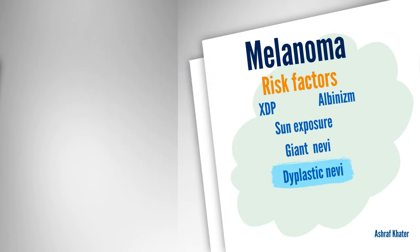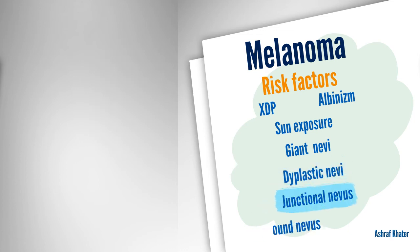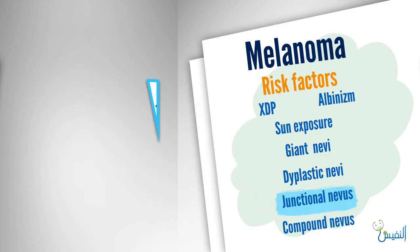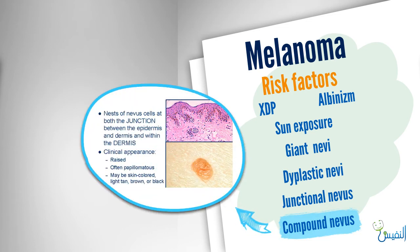Two special types are junctional nevi and compound nevi. Junctional nevi, as seen in this microscopic photo, is the presence of melanin pigments in the junction between the epidermis and the dermis. Normal nevi are present in the deep part of the dermis, but junctional nevi are present in clusters at the junction. Compound nevi are intradermal nevi plus junctional nevi. Presence of junctional nevi is a risk factor for developing melanoma.